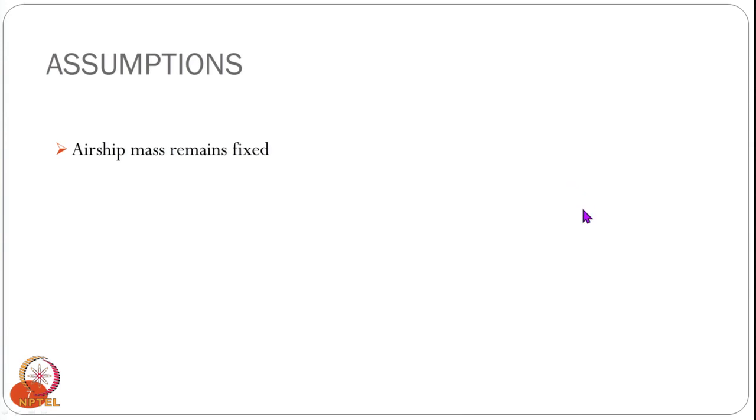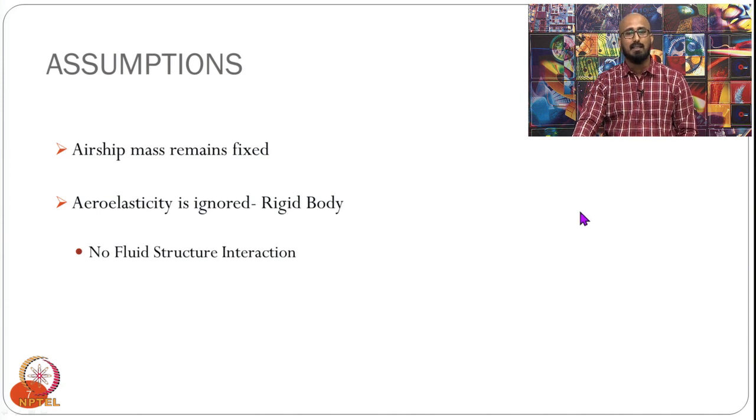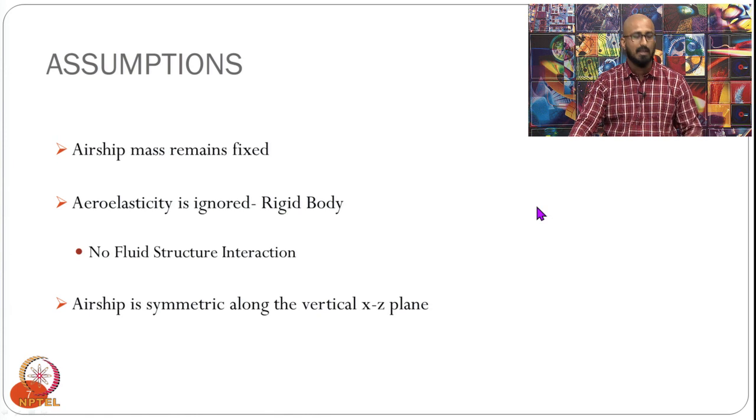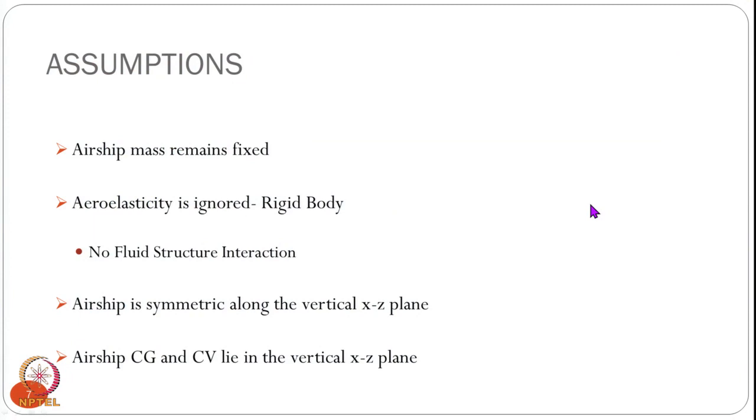Moving ahead, we make some assumptions to simplify the dynamics model. First, we assume the airship mass remains fixed. Second, we assume no aeroelasticity — no fluid-structure interaction — treating the airship as a rigid body with no deformations in flight. Third, we assume the airship is symmetric along the vertical x-z plane. Fourth, the center of gravity and center of volume lie in the same vertical x-z plane.